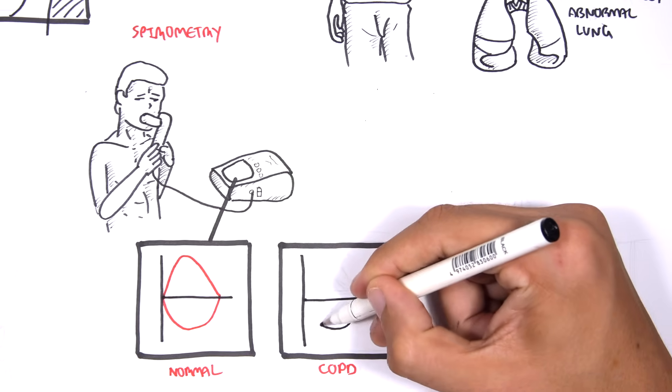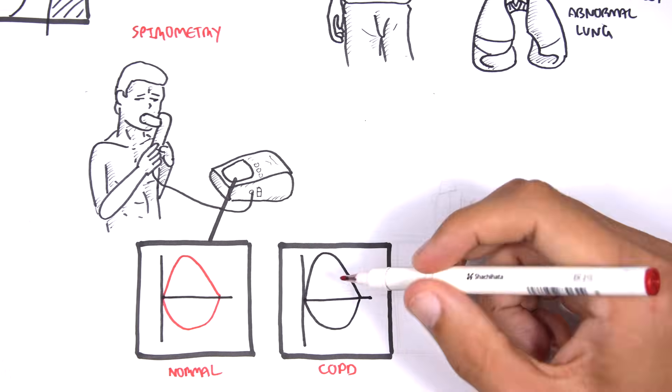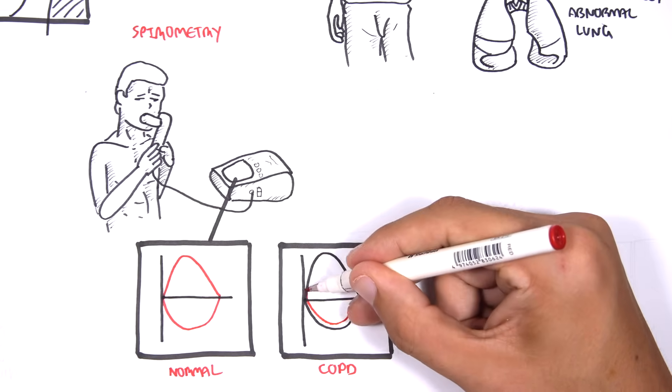So again, here we have the normal inhalation and exhalation curve in black, and in red COPD. There is a decrease in volume.